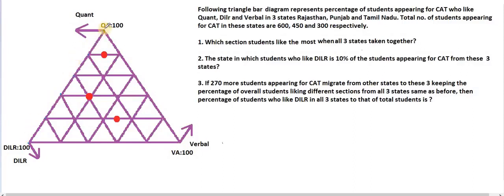So it starts from 100, then here it will be 80, here 60, here 40, here 20, and here zero. These lines represent the quant values. At this particular point, the value of quant is nothing but 100.